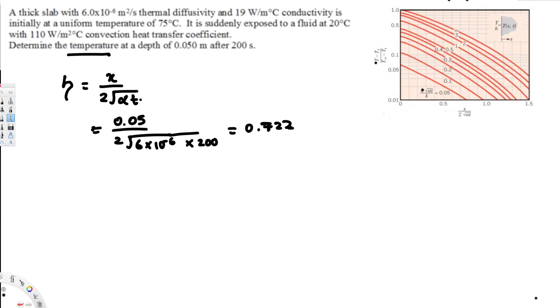And also we need h square root of alpha t over k. This one represents this line, so we have to find out which line we are going to use. Now let's go ahead and calculate that one.